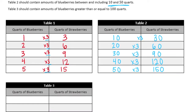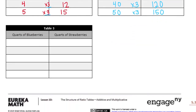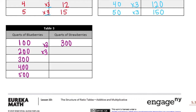Table 3 should contain amounts of blueberries greater than or equal to 100 quarts. Let's do 100, 200, 300, 400, and 500. Again the relationship does not change — it's still multiplying by 3. So for every 100 blueberries we need 300 strawberries, for 200 quarts we need 600 strawberries, continuing down the chart until we have 500 blueberries and 1,500 strawberries.